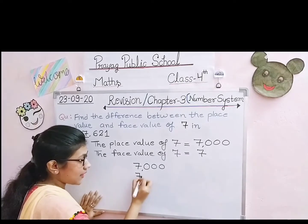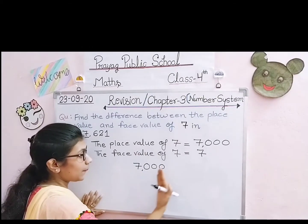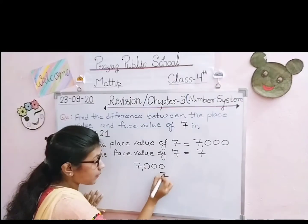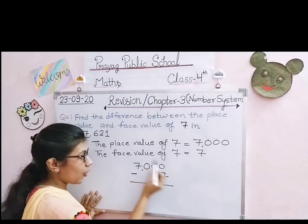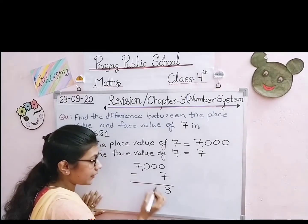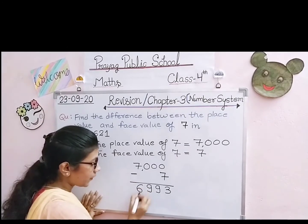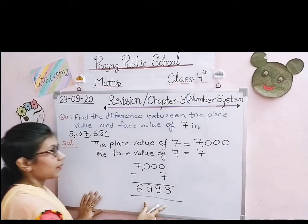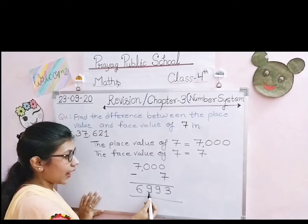हम numbers को ones के column से arrange करते हुए लिखते हैं। 7,000 में से 7 का subtraction करना है। Subtraction का sign लगाएंगे। Ones column में: borrow करना होगा — 10 - 7 = 3। Tens column में: 9, as it is। Hundreds column में: 9, as it is। Thousands column में: 6। तो हमें result मिला 6,993। जब हमने 7 के place value और face value find out करके difference निकाला, तो result मिला 6,993।